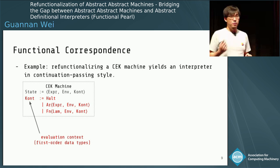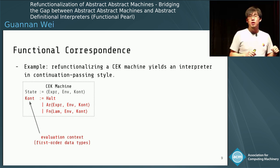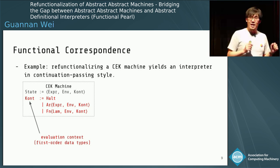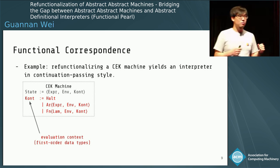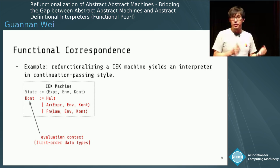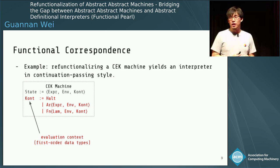The first variant is a halt, meaning the context is empty and there is no more computation to do. The second is an argument context, meaning this context holds an expression at an argument position waiting for evaluation. The third is a function context, meaning a lambda term has already been evaluated and the next step is to apply the argument into that closure. In the CEK machine, this evaluation context is defined as a first order data type.